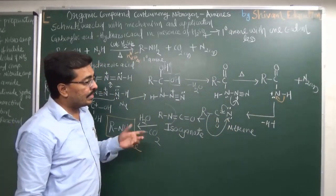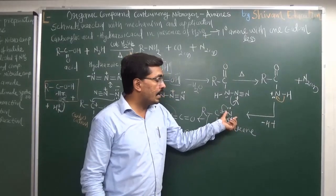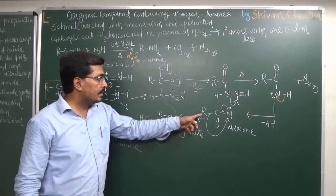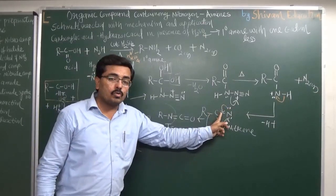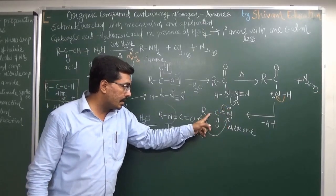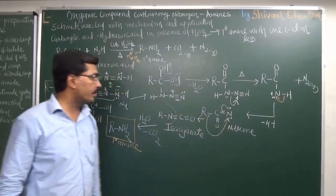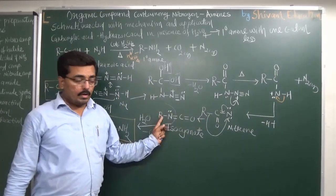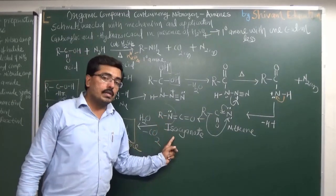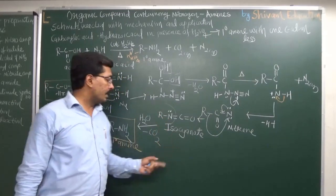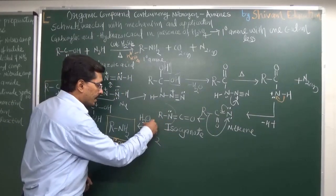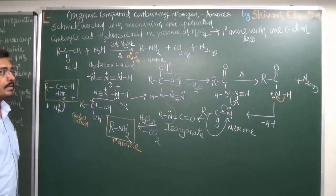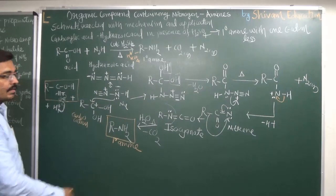To obtain stability, hydrogen is lost, the electron pair transfers onto nitrogen, and we get the nitrene. The nitrene has two electron pairs on nitrogen. For stability, nitrogen donates an electron pair to carbon and the alkyl group migrates onto nitrogen, giving isocyanate. Isocyanate on hydrolysis loses CO₂ and gives a primary amine.